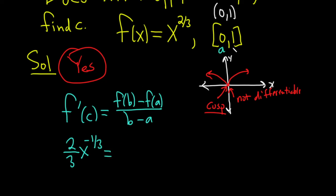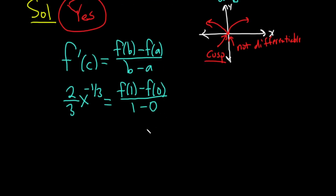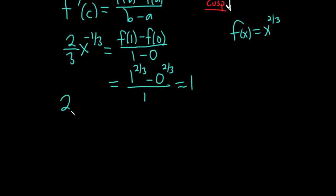A here is zero and b is one. So this is really f of one minus f of zero over one minus zero. So our f of x is this funky function x to the two thirds. So this is equal to one to the two thirds minus zero to the two thirds over one minus zero, which is one. So this is just going to be one.